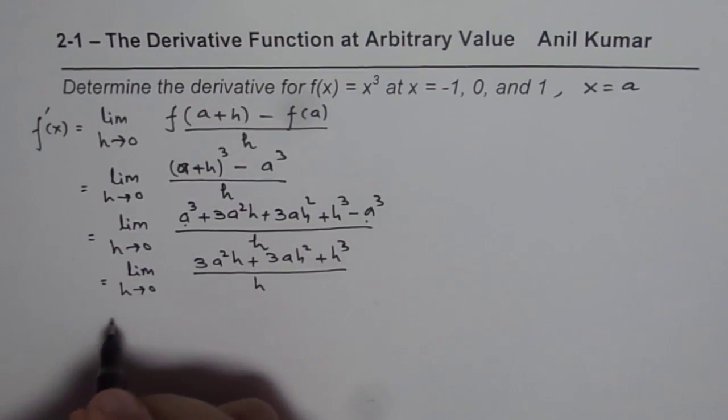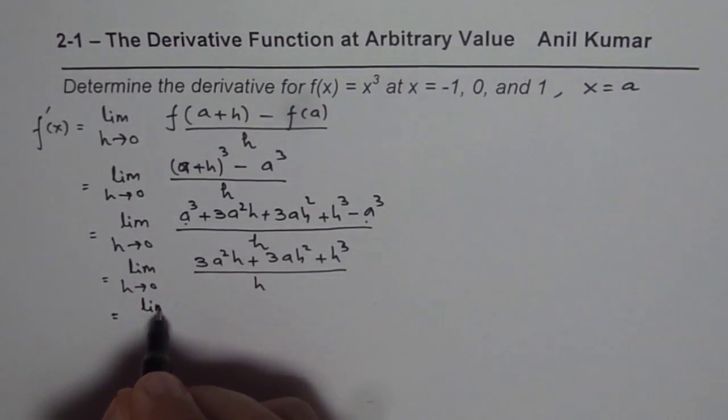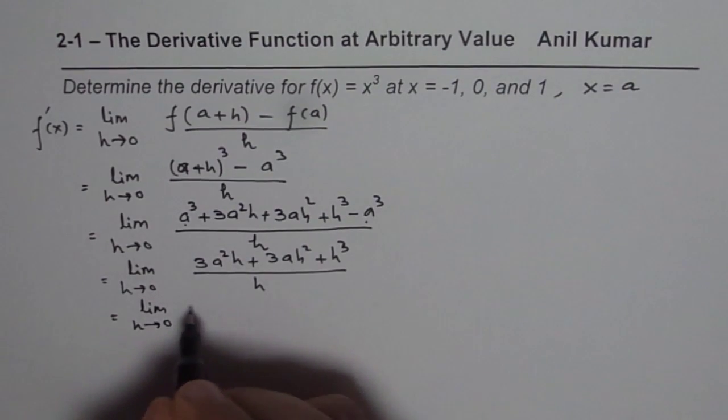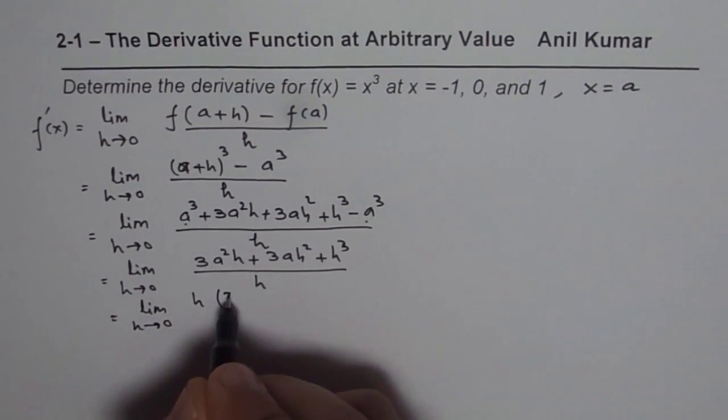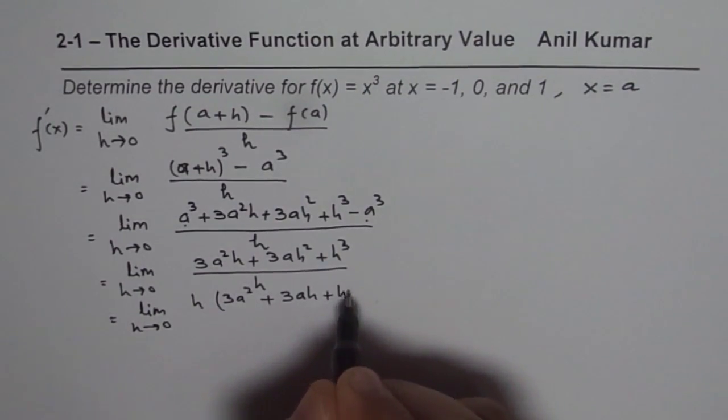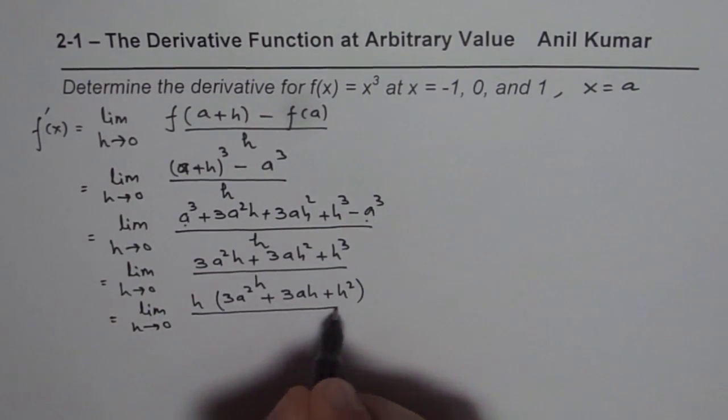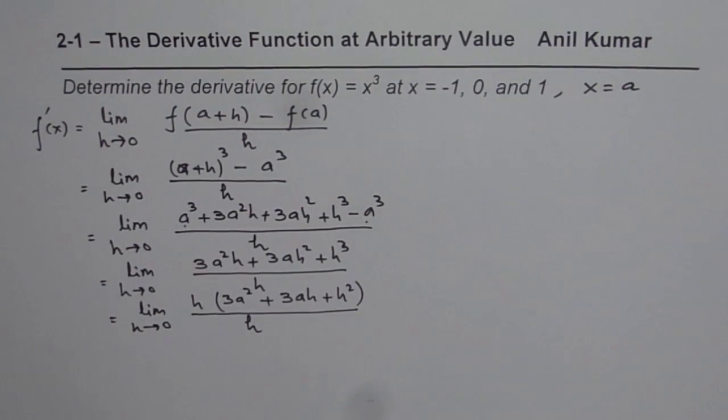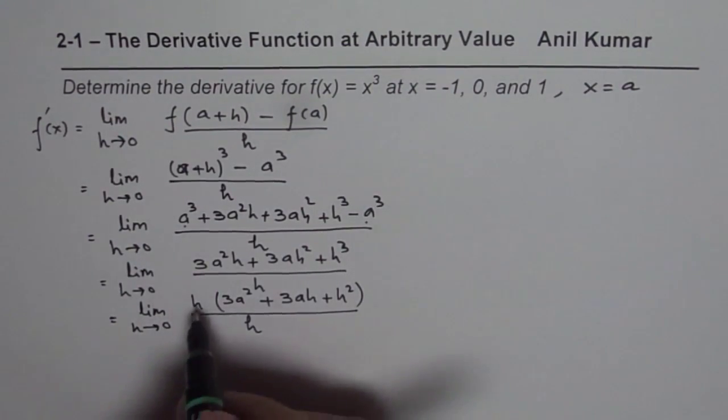We can factor out h from the numerator. So we get lim as h→0 of (3a² + 3ah + h²). Once you do that, you can cancel h from numerator and denominator.